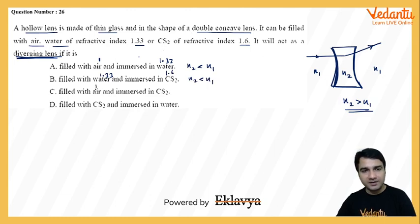Third case, filled material is air and the outer material is CS2. Again, N2 is less than N1.